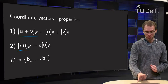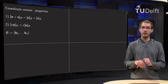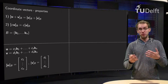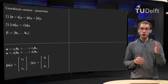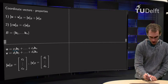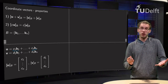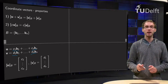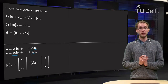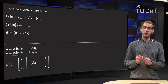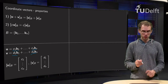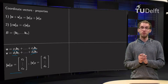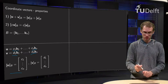Let us take some basis b consisting of the vectors b1 up to bn. We can express both u and v in our basis b: u equals c1·b1 plus ... plus cn·bn, and v equals d1·b1 plus ... plus dn·bn. Then we can write down the coordinate vectors immediately. The coordinate vector of u with respect to b is just the weights c1 up to cn, and the coordinate vector of v is the weights d1 up to dn.